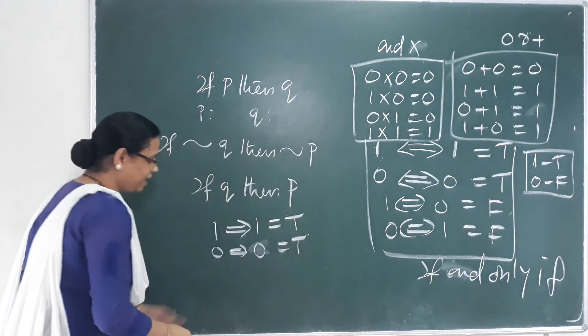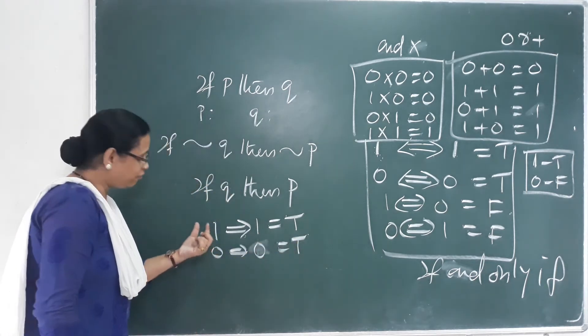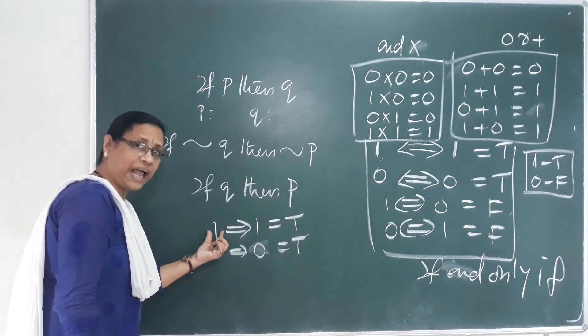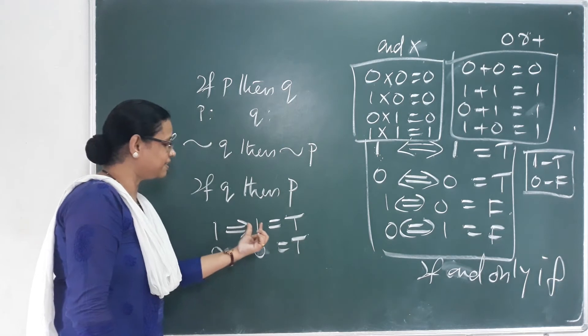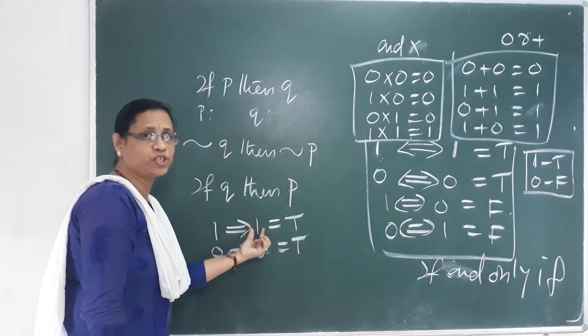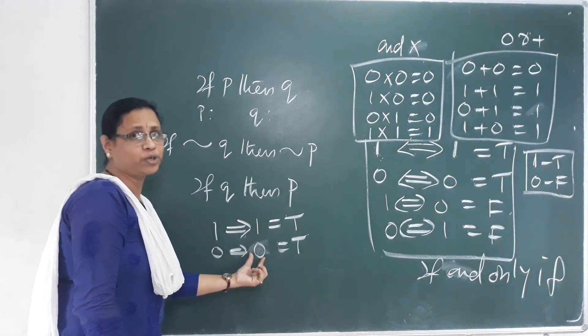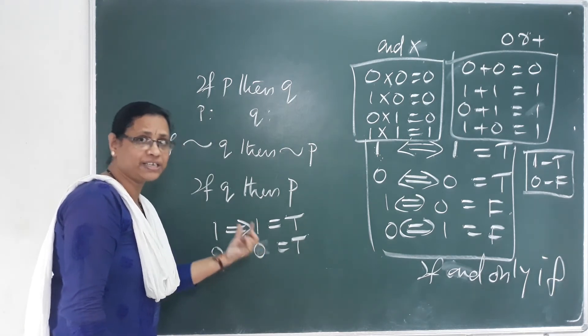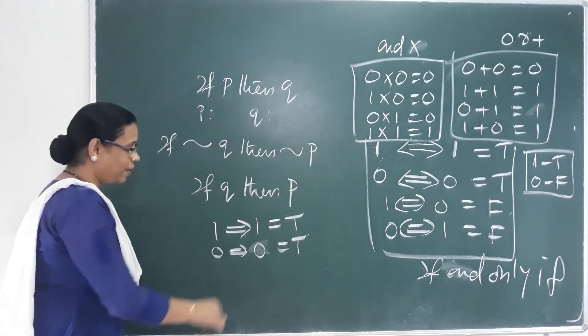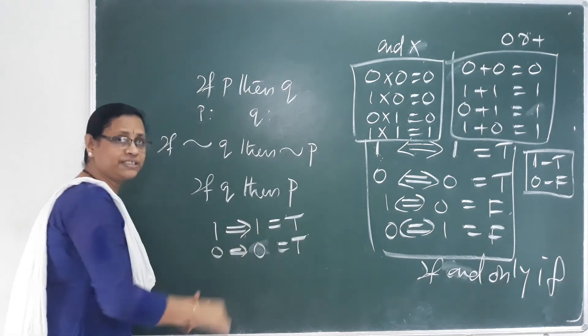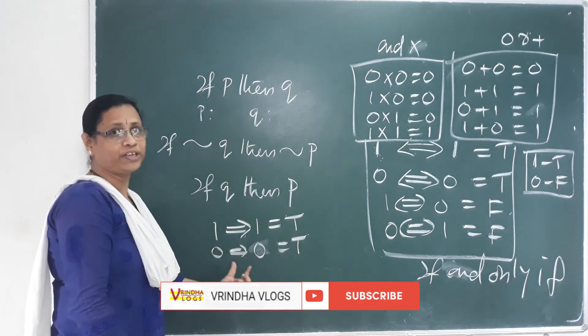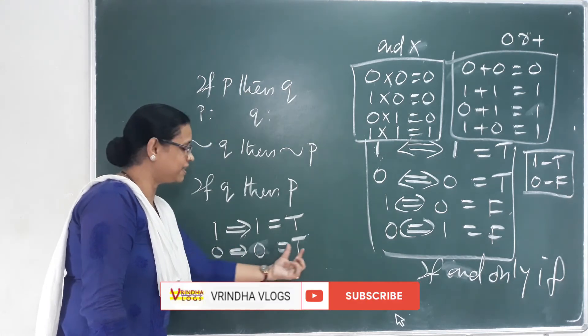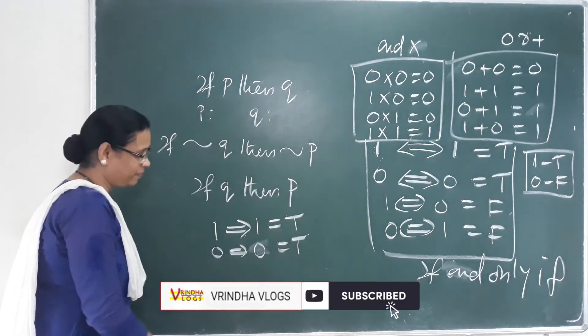The first one is the antecedent, and this is the consequent. What is the result? We will get the result. What is the result in the value? The result is true.